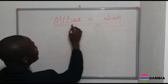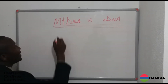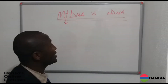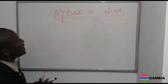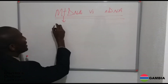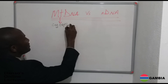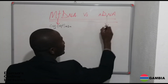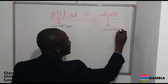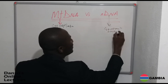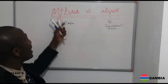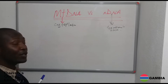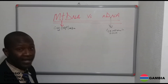Mitochondria DNA and nuclear DNA are two different DNAs that we normally see in organisms. Mitochondria DNA is one of the cytoplasmic DNAs, while nuclear DNA is the genomic DNA. Genomic DNA is found in the nucleus of an organism. Mitochondria DNA and chloroplast DNA — which we are not going to discuss today — are the two cytoplasmic DNAs.